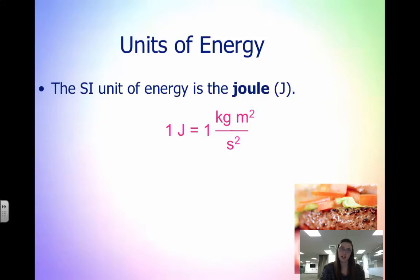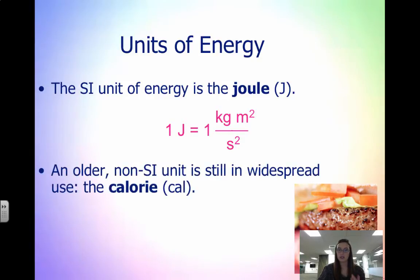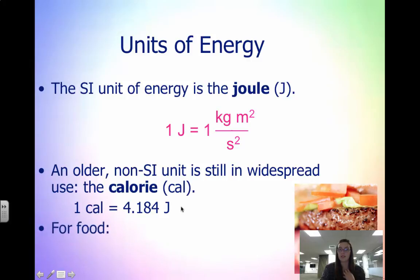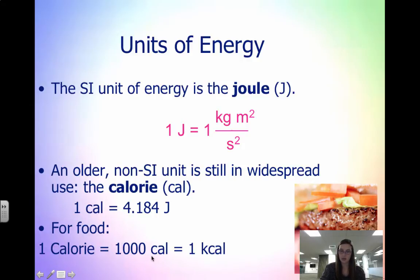The SI unit of energy is the joule. The joule is derived from mass and velocity — since kinetic energy is one half mv squared, the joule is a kilogram times meters squared over seconds squared. An older unit still used is the calorie, lowercase c. One calorie equals 4.184 joules. This is not the same as the food calorie, which uses a capital C and equals 1,000 small calories, also known as 1 kilocalorie. It's important to remember both of these conversions.